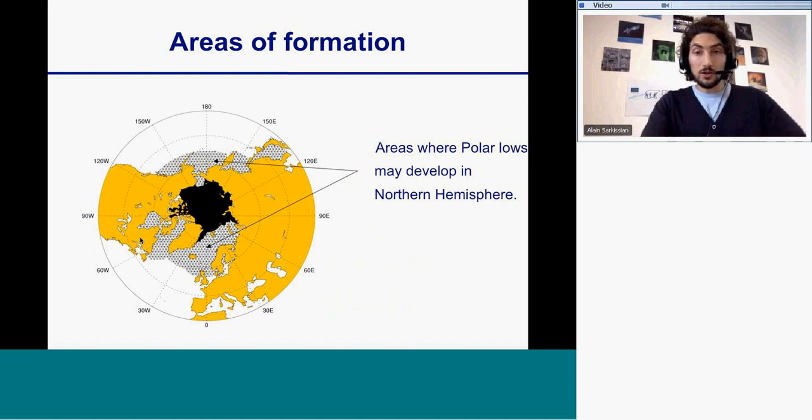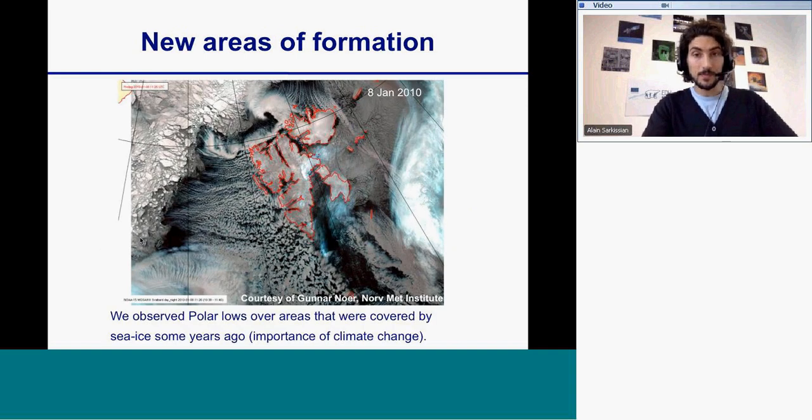I will show briefly the areas of formation for the Northern Hemisphere. We can see that they develop everywhere near the North Pole with open sea areas. There are some areas of formation of polar low connected with the climate change and retreat of sea ice.